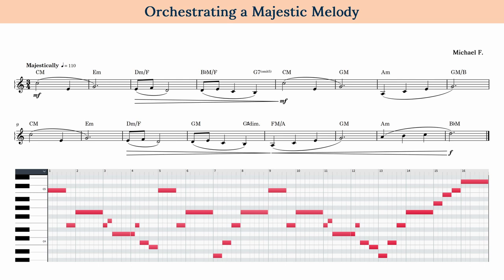In addition to the melody and chords, I asked my patrons to include a descriptive or expressive adjective or phrase that would help me in the orchestration process. One of my patrons, Michael, sent me this melody with the descriptive word 'majestically.' The descriptive word is really helpful because it can inspire a particular timbre or rhythm or some other aspect of a potential orchestral texture. In this case, the word 'majestically' made me think of brass, specifically of a solo horn.